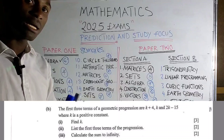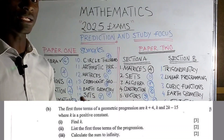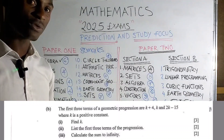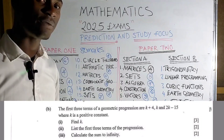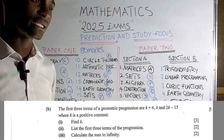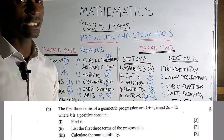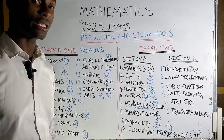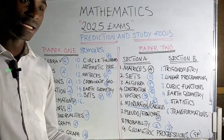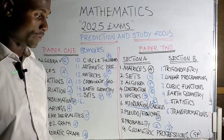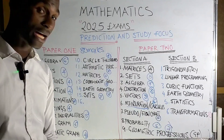The second GP scenario: you are given the first three terms but they contain variables — for example, one plus x, x minus two, x plus three. The first question will be to find the value of x. The second question may ask for the first term or common ratio, and they may also ask you to calculate the sum to infinity or any related question.